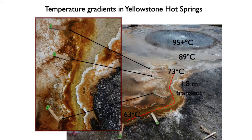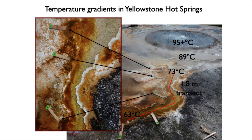Let me switch gears and talk about some outputs from a QIIME2 microbiome bioinformatics project. The first example is based on those Yellowstone hot springs. This is a project I worked on about 10 years ago. These hot springs have boiling water at the core, with water flowing outward. This water here was 95 degrees Celsius, and as it flows away, it decreases in temperature very quickly — down to 63 degrees further out along the outflow channel.